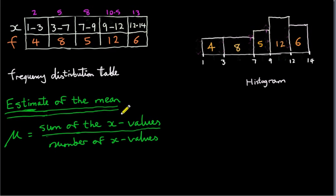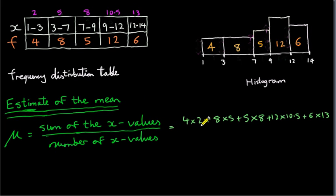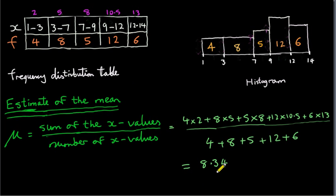When getting the sum of x values, we have four 2s, eight 5s, five 8s, twelve 10.5s, and six 13s. So we multiply 4 by 2, 8 by 5, 5 by 8, and so on, then sum the results. We divide by the number of x values, which is the sum of all frequencies. We get the answer 8.34. The formula for the mean can be written as: mu equals sigma fi xi divided by sigma fi.